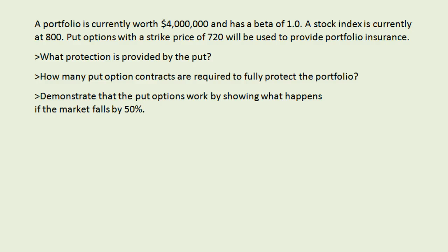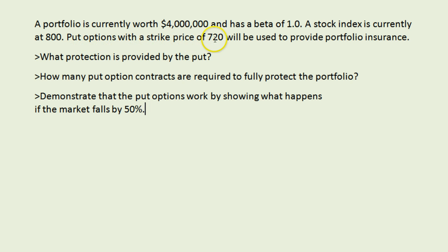Hello everyone, Jeff here with an example of providing portfolio insurance using put options on a stock index. In this example we have a portfolio worth four million dollars with a beta of one. We are looking at a particular stock index whose value is currently 800, and we are going to use put options with a strike price of 720 to provide insurance on this portfolio.